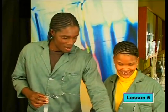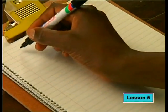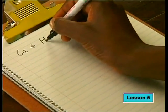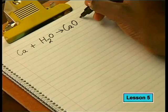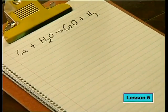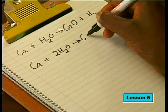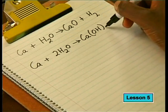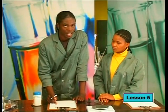This is where all that practicing of chemical calculations is going to start paying off. If you write the two theoretical equations for the two possible products, you get: for the reaction of calcium and water to form calcium oxide and hydrogen gas — Ca + H₂O → CaO + H₂ — and for the reaction of calcium and water to form calcium hydroxide and hydrogen gas — Ca + 2H₂O → Ca(OH)₂ + H₂.